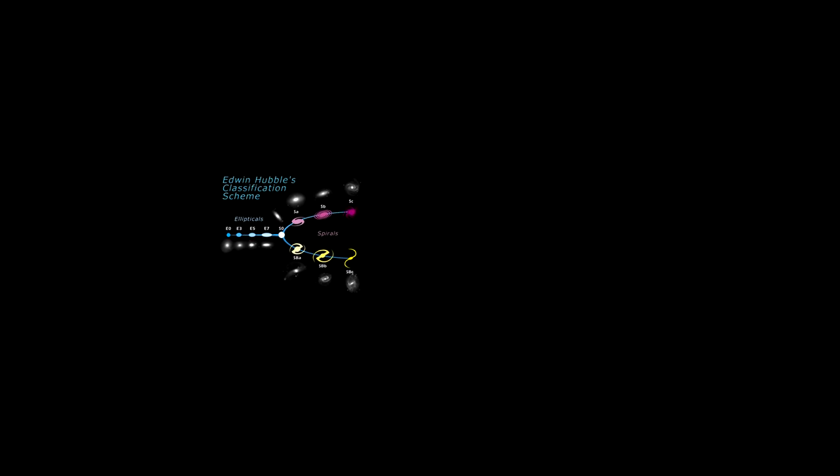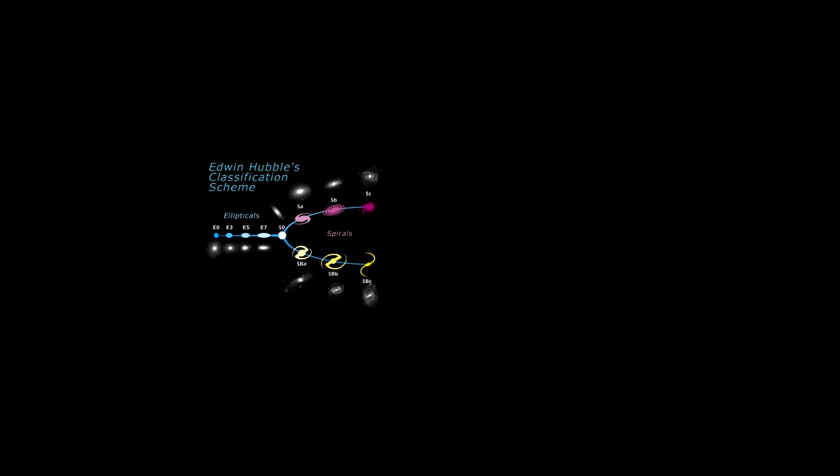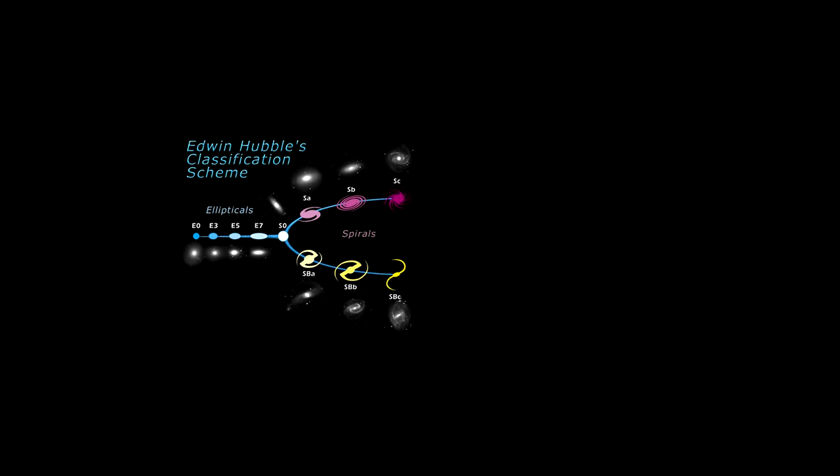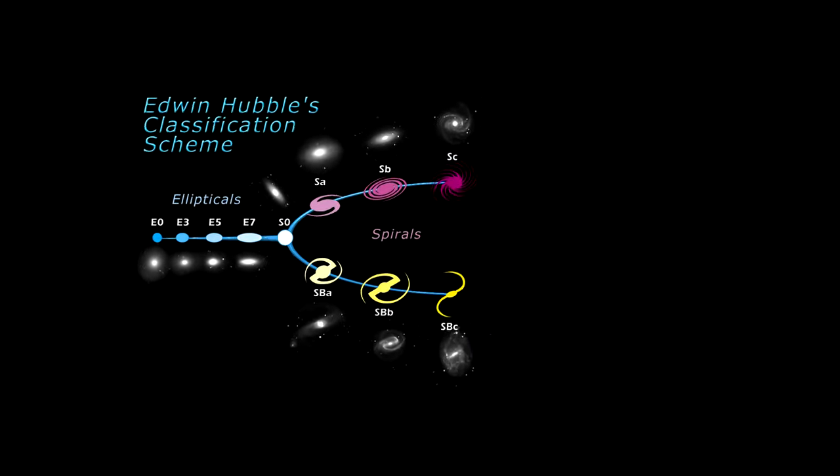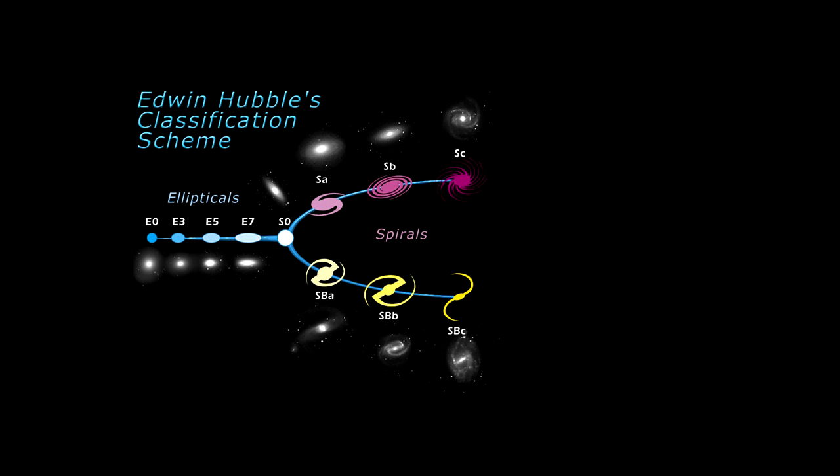In 1926, there were enough galaxies known for Edwin Hubble to create a morphological classification scheme. This is his diagram. His students called it the Hubble Tuning Fork.